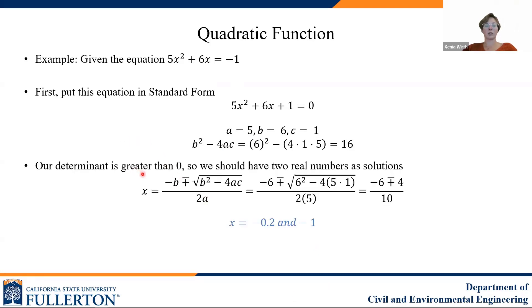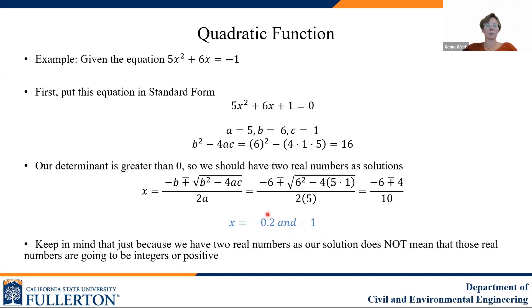And since our determinant is greater than zero, we should have two real numbers as solutions. We plug our values for a, b, and c into our quadratic formula here, and we find that the solutions for x are the roots of this equation that would make this expression equal to zero, are x is equal to negative 0.2, and x is equal to negative 1. It's important to note that even though these numbers are negative and one number is a fraction, so it is not an integer, it does not mean that these are not real numbers. These are definitely real numbers. It just means that these are real negative numbers, and this is a real number that is not an integer. So keep distinct the definition for a real number versus an integer versus a positive number.